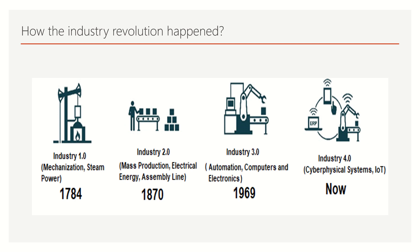Before we go into the session content, we need to understand how exactly the industrial revolution started. The first industrial revolution, Industry 1.0, started in 1974 and is all about mechanization and steam power usage. Then it became Industry 2.0 at 1870, where assembly line, electrical energy usage, and mass production came into picture. By 1969, automation came into picture and computers and electronics started growing. Now we are in the world of cyber-physical systems and IoT — this is called Industry 4.0, what we call the Industrial IoT setup and Industrial Internet revolution.